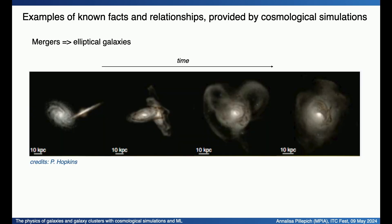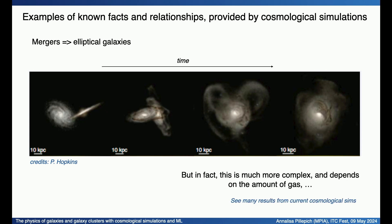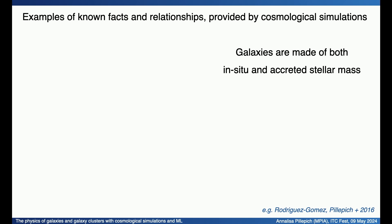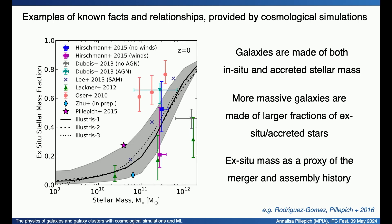Simulations have been mined with traditional techniques for decades, showing us that mergers usually produce elliptical galaxies. The situation is more complicated — it depends on how much gas is available — but chances are that if you see an elliptical galaxy, it underwent more or more massive mergers than disk galaxies. Simulations like Illustris and TNG also put a quantitative assessment on the fact that galaxies are made both of in-situ stars — made by gas cooling within the gravitational potential well — and accreted stars, stars stripped from mergers and satellites. On average, more massive galaxies are made of a larger fraction of ex-situ and accreted stars, and ex-situ mass in a galaxy is a proxy for the merger and assembly history.